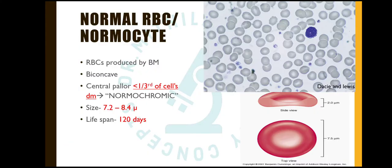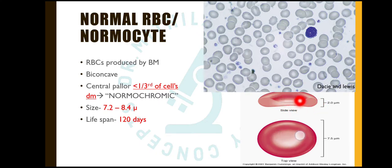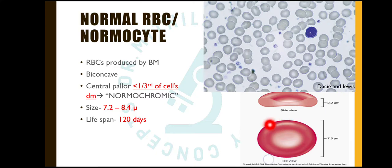Next we come to a normal RBC, also known as a normocyte. RBCs produced by the bone marrow are biconcave. In the side profile we can see depressions in the center and a bulge in the periphery — so in the center it is depressed and in the periphery it is bulged. This is a biconcave shape.